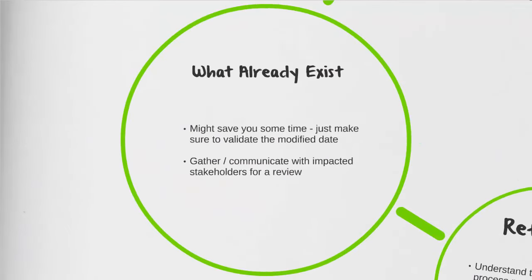The easiest way to start gathering information is to see what already exists. If you're working for an organization, they may have a process repository available with documented process maps. If not, they may also have training materials and procedures available that you could look through. This information is very important, as these training materials will give you a starting idea of where the process starts and where it finishes. You will also want to check with your impacted stakeholders to see if they have any additional information available, as they may already have been looking at it.